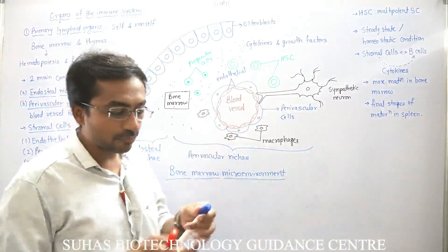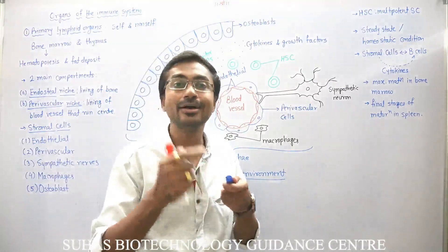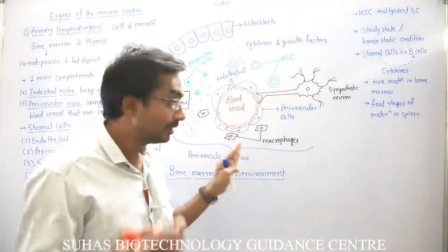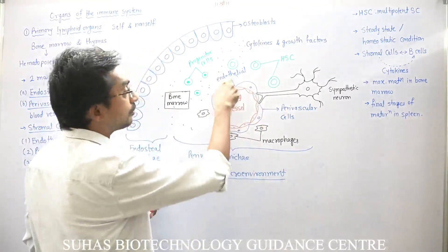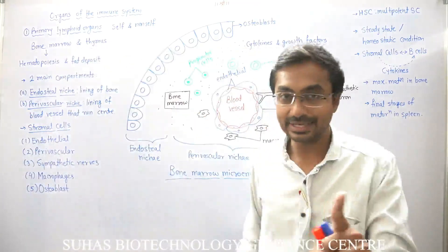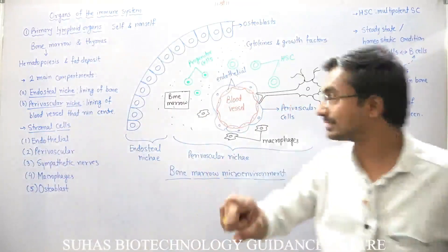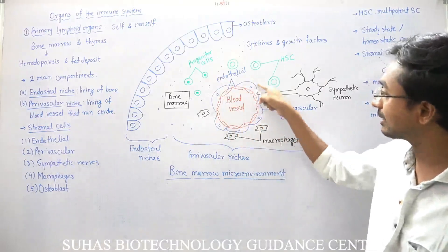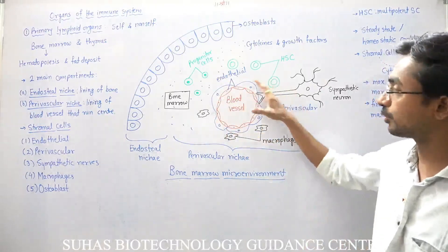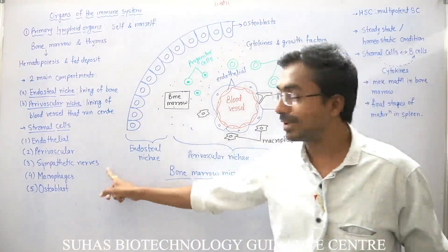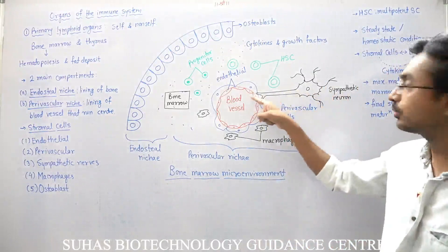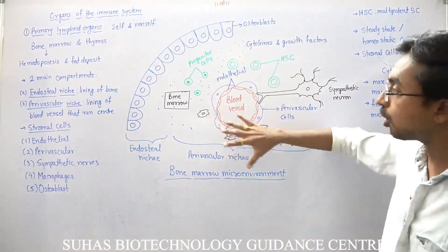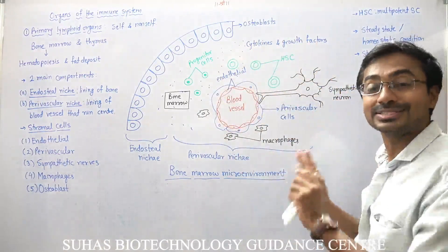There is a main blood vessel present at the center of the bone marrow. If we cut a bone exactly at the center, we will find a major blood vessel, and other smaller blood vessels may also be seen. The lining of the blood vessels is formed by endothelial cells. Other than that, there are perivascular cells present right beside the endothelial cells, giving extra protection. Additionally, sympathetic neurons are present, keeping all cells in the bone marrow connected with each other and with the nervous system.